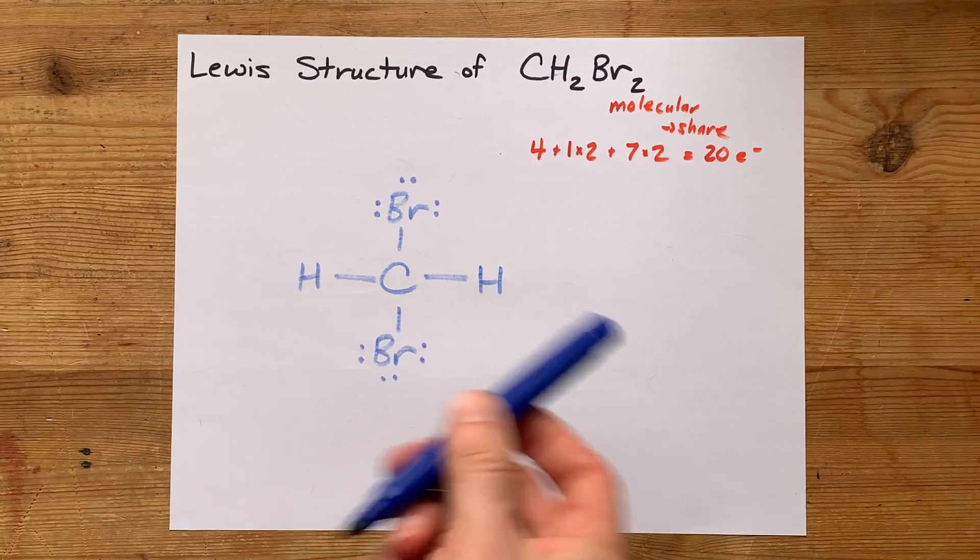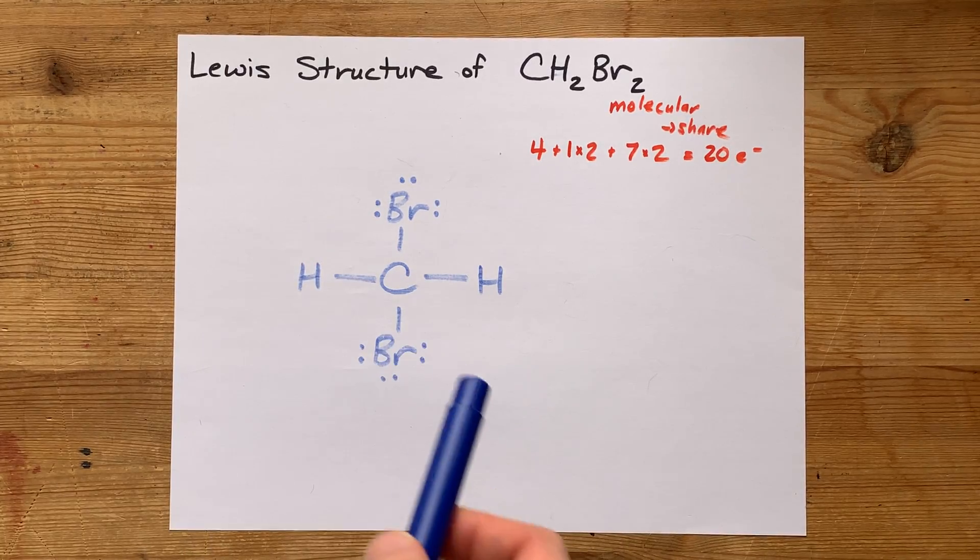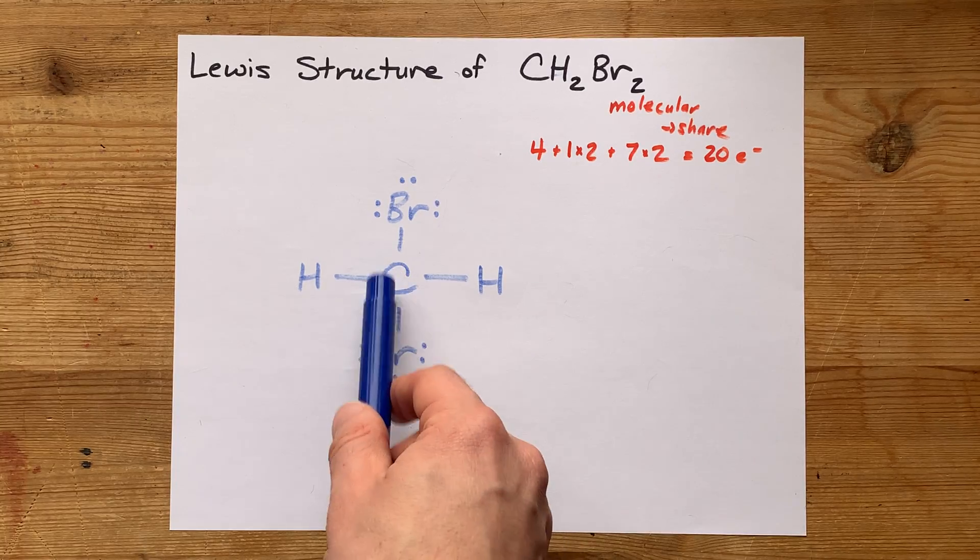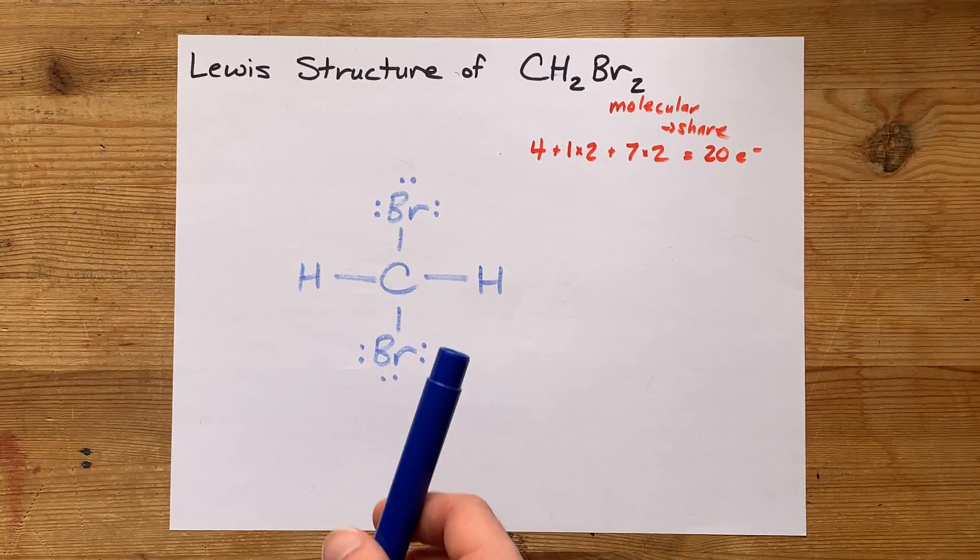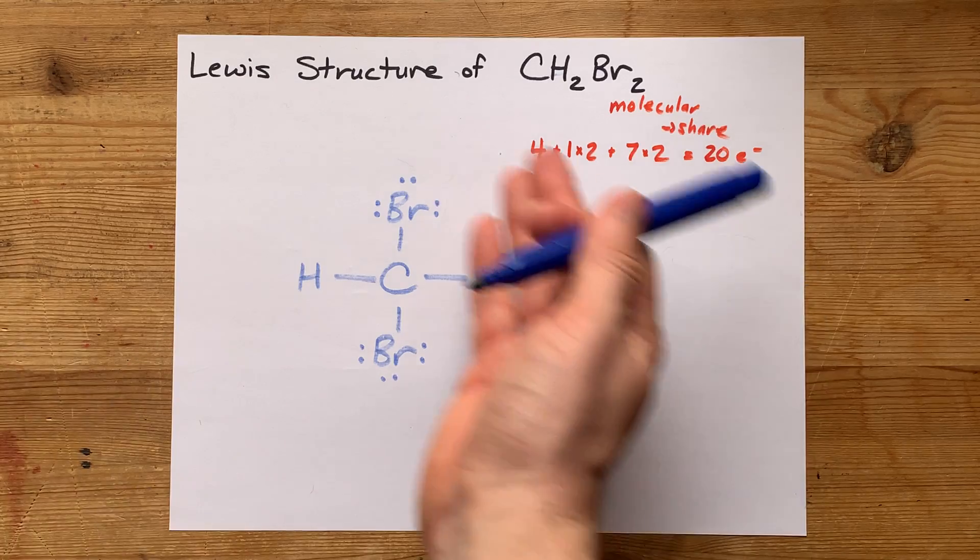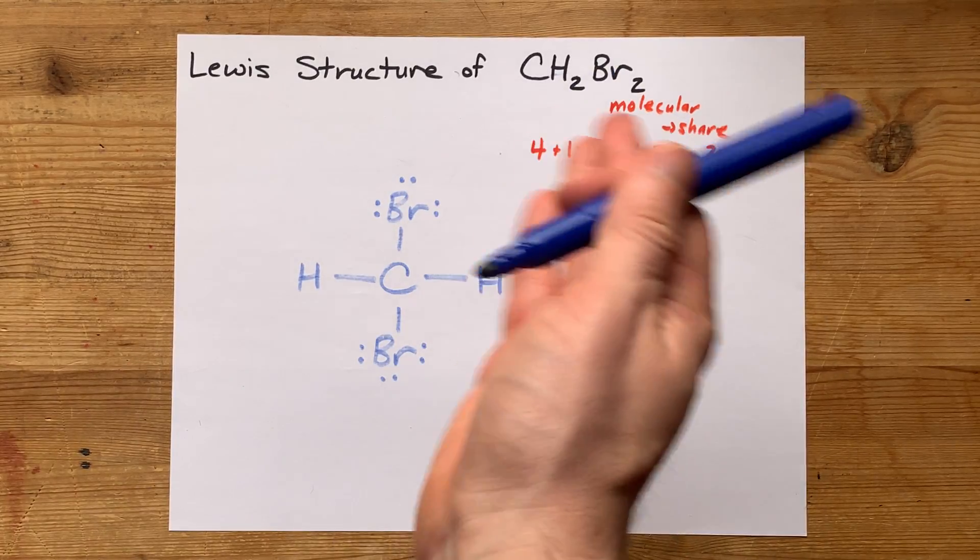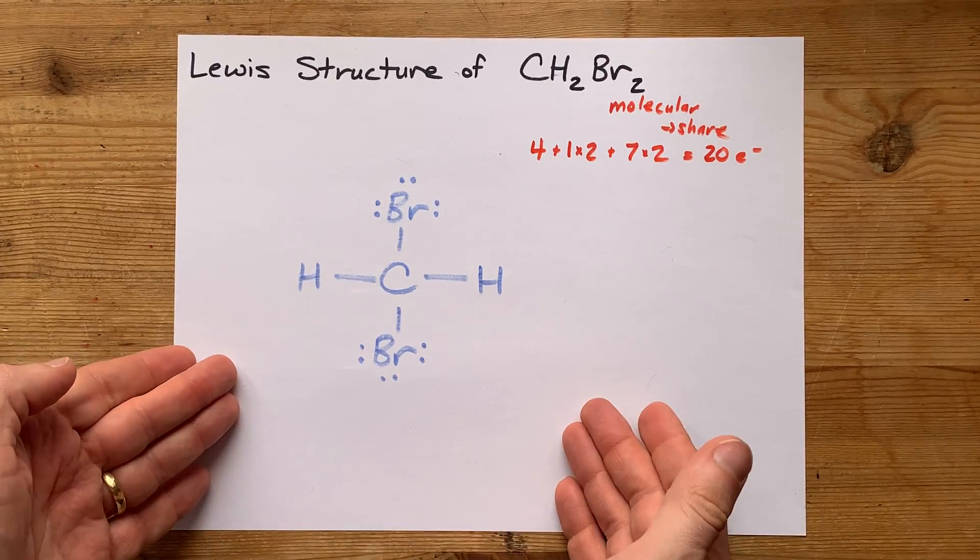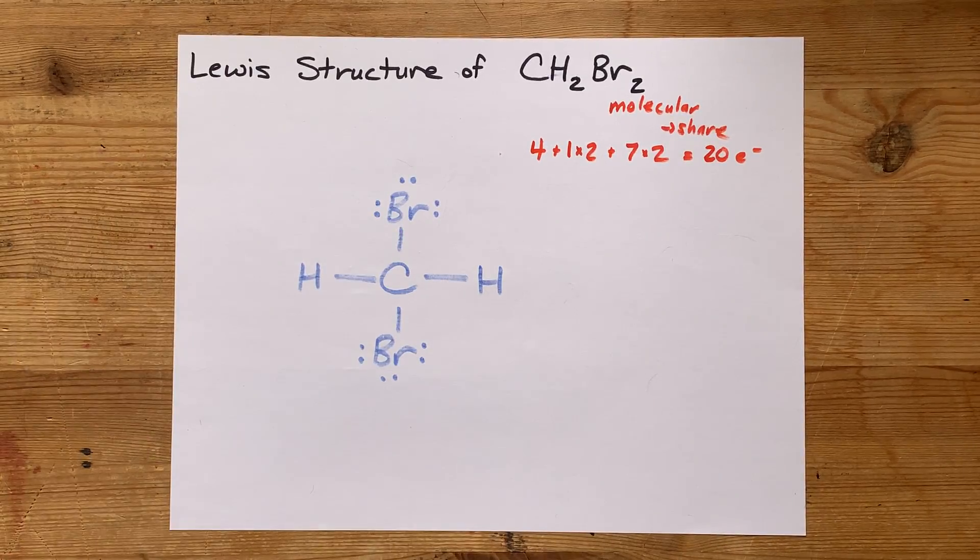That's all 20 electrons that I'm allowed to use drawn here. Luckily, my bromines both have their full octet, and this carbon also has a full octet. I'm done. This is the complete Lewis structure for CH2Br2. I hope it made sense as we drew it together. Thanks for being with me, and best of luck.